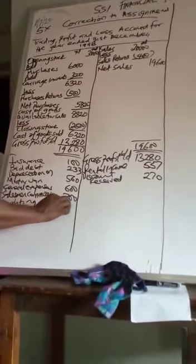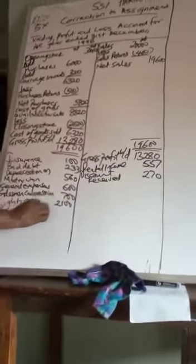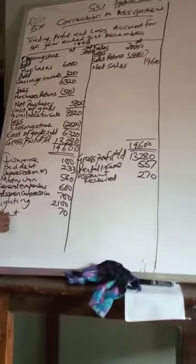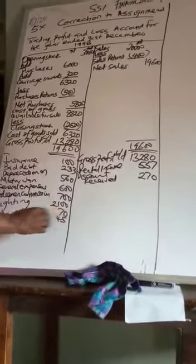Rent 17 naira, rates 45 naira, salaries and wages of 565 naira. We have carriage outwards.